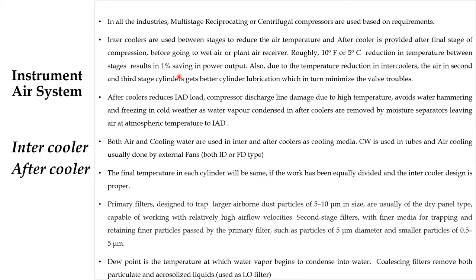Normally, in between stages due to compression, the temperature will increase from ambient (around 35°C) to 150–160°C. So in the intercoolers, the temperature is reduced from 160°C back down to around 30°C — almost 130°C is reduced. That represents 26% power saving in the intercoolers. If the intercooler is working properly, the cylinder will get proper lubrication, which minimizes wear trouble for the compressors.